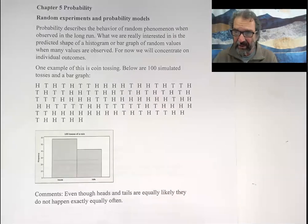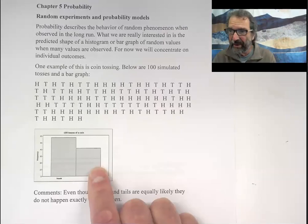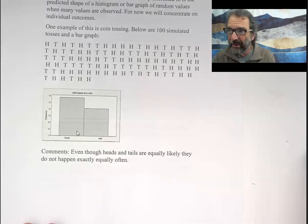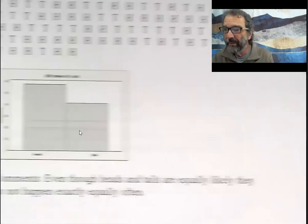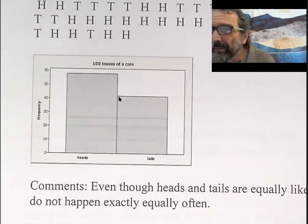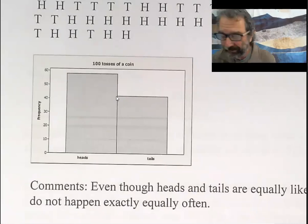Down here we have a bar graph that shows the number of heads and number of tails, which I will now try to zoom in on. Here we go. So there it is. We see that it's maybe 58 heads and maybe 42 tails.